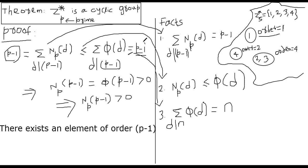Therefore, each element in your summation must match the corresponding element in the other summation. This is true because each element on the left-hand side is less than or equal to the element on the right-hand side. One particular divisor of interest is p minus 1 itself, since p minus 1 divides p minus 1. Therefore, np(p minus 1) must equal φ(p minus 1).